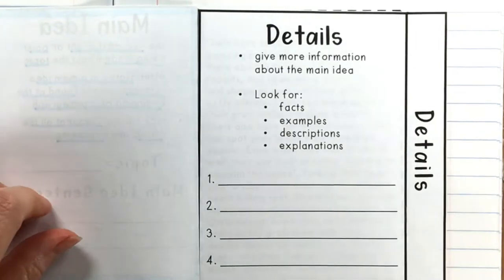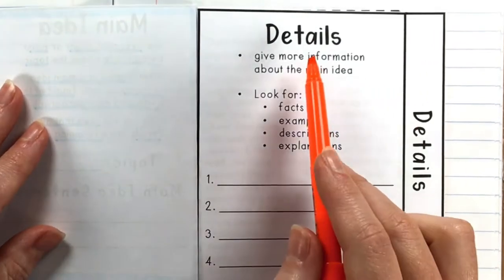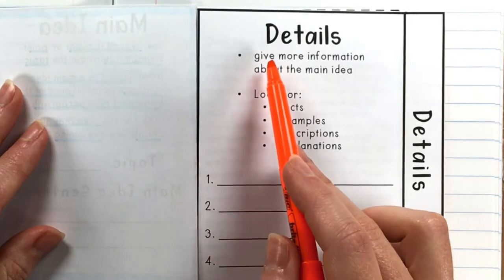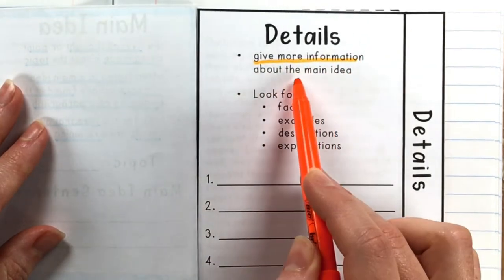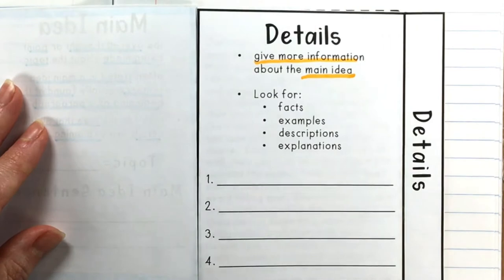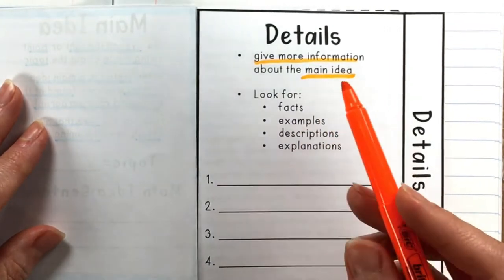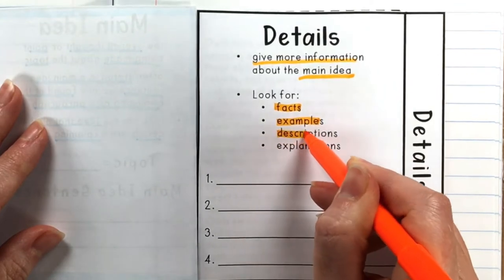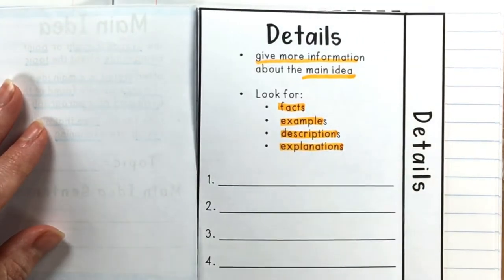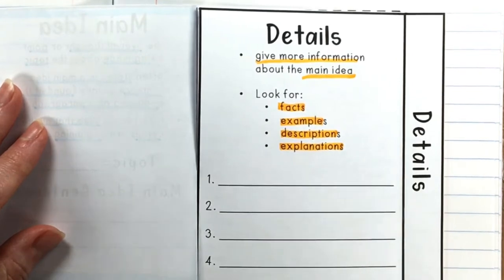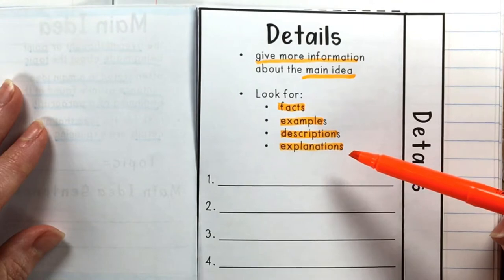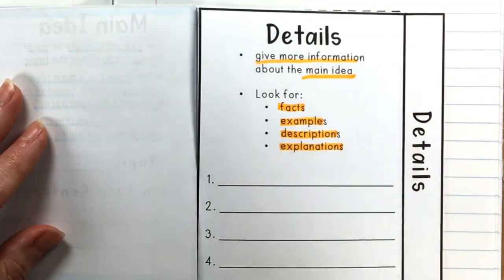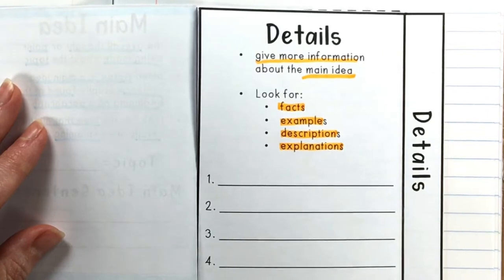Now we're going to talk about details and see exactly what they are and how they can help us figure out the main idea. The details are going to give more information about the main idea, and that information is going to come in the form of facts, examples, descriptions, and explanations. These details will tell us more about what the overall thought is and also help us figure out that main idea by looking at what they are all telling us.